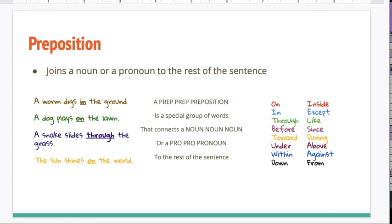So some other examples are on, in, through, before, toward, under, within, down, inside, except, like, since, during, above, against, from. There are a lot of prepositions in your jingle number eight, and so I would encourage you to look in your blue spiral to find jingle eight and do that jingle.